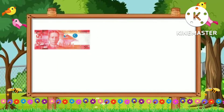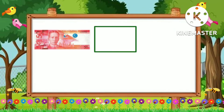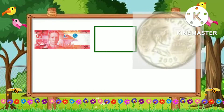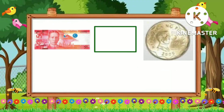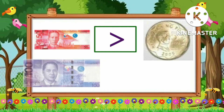For this example, I have 50 pesos and five pesos. What we're going to use here is the symbol of greater than, because 50 pesos is greater than five pesos.